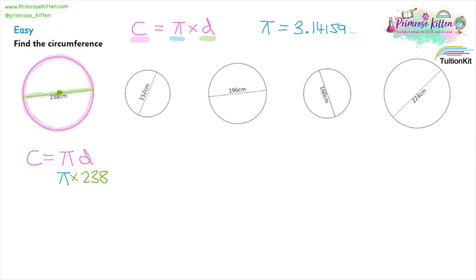That gives us a final answer of 747.7 centimetres to one decimal place. Note that the units are centimetres, not centimetres squared, because we only multiplied pi by one lot of centimetres — so it's a length we found, the circumference, not an area.